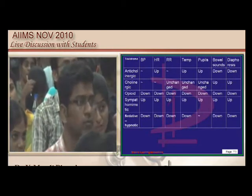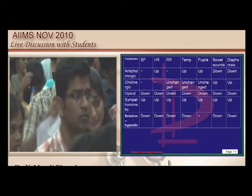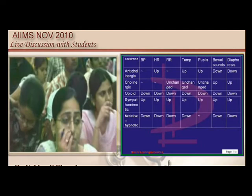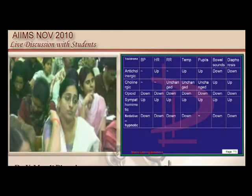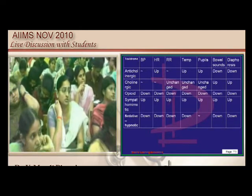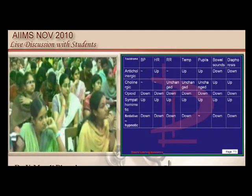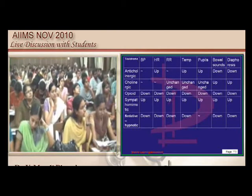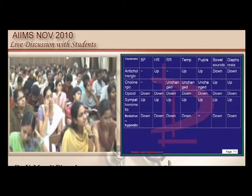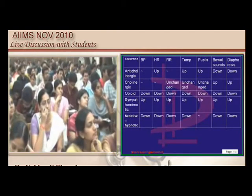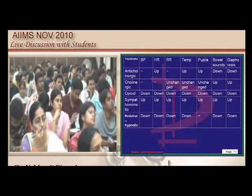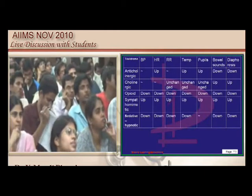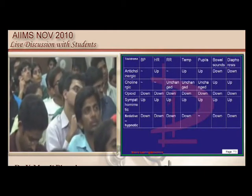The greater petrosal nerve provides cholinergic secretomotor fibers to the lacrimal gland, so cholinergic stimulation leads to lacrimation. Atropine causes dryness everywhere, so it would not explain lacrimation. There are no hallucinations to consider LSD.